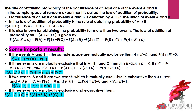The rule of obtaining the probability of the occurrence of at least one of the events A and B in the sample space of a random experiment is called the law of addition of probability. That is, if we have two events A and B in our sample space, the probability of at least one occurring is found by: P(A∪B) = P(A) + P(B) - P(A∩B).